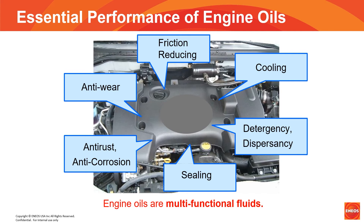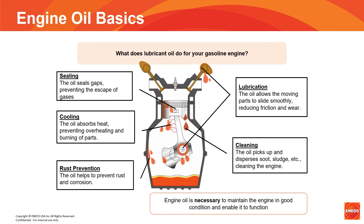How does oil do that? Oil seals gaps between piston walls and rings. It helps cool by absorbing heat and then transferring it. Rust prevention is accomplished with additives. As the oil circulates through the engine, it picks up contaminants that would otherwise do harm and holds them in suspension until the oil is changed. Lastly, the lubricating properties allow moving parts to slide smoothly, thereby reducing friction. Although all oils have these basic properties, there can be vast differences in how well each oil performs these important functions.